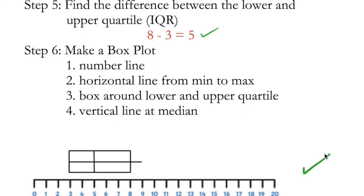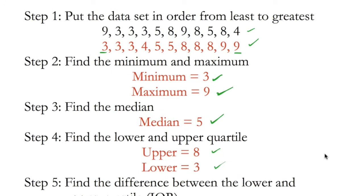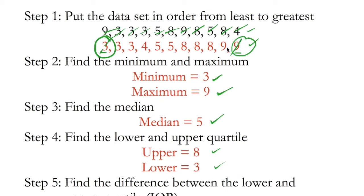If you did all six steps correctly, go ahead and meet me back here tomorrow for day number four. If you had a mistake along the way, I'm going to go through each step in more detail right now. Back to step one — we put it in order: 3, 3, 3, then a four, a couple of fives, three eights, and then two nines, from smallest to biggest. Minimum and maximum: you just pick the number on the far left and the far right. For the median, we use the cross-off method — crossing out big and small, small and big — and we're left with a five in the middle. That is our median.